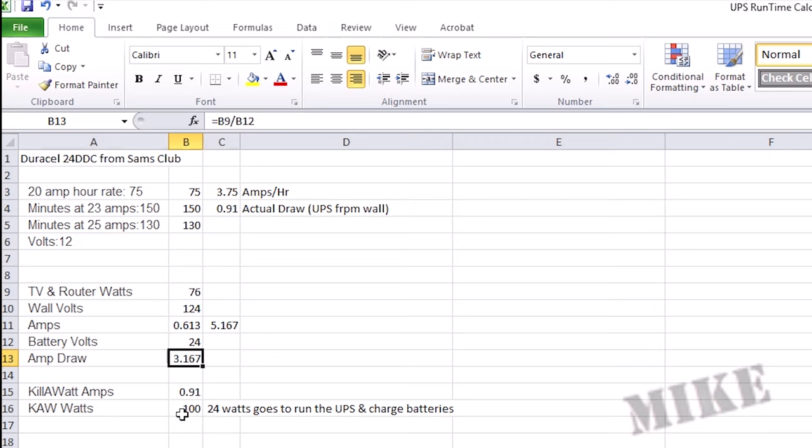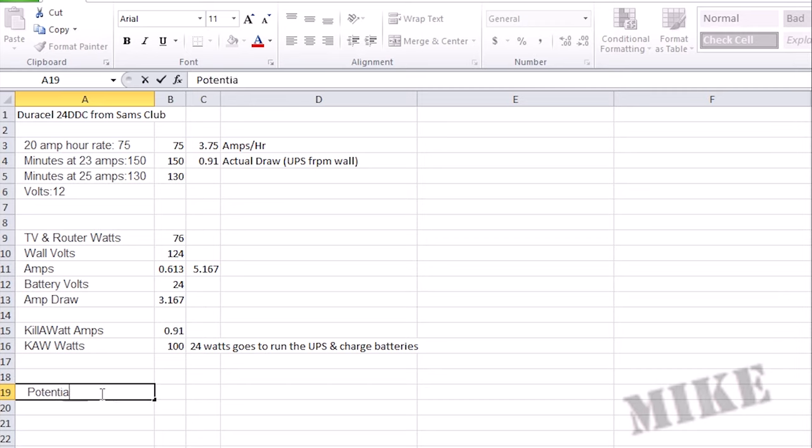Oddly enough, the kilowatt that I had the UPS plugged into, 24 watts are going to run the UPS itself and charge batteries. But that's not important once it's on battery power. So the potential runtime for this is actually a little bit longer than I may expect.